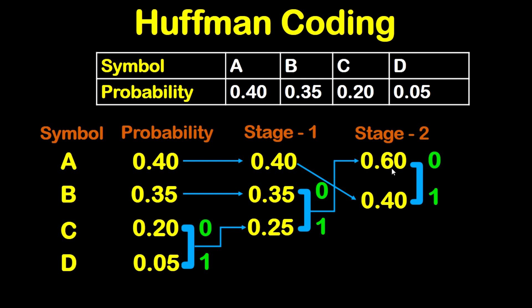So 0.6 is the bigger number and 0.4 is the smaller number. Again we will put 0 at the top and 1 at the bottom. Now since we have reached only two probabilities we are going to stop. Now let's find the code for each symbol A, B, C, D.